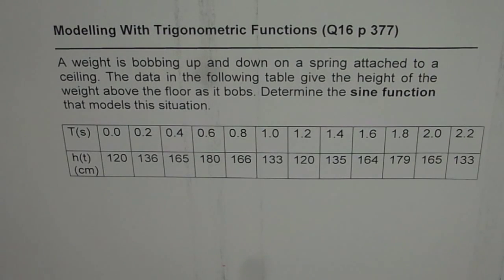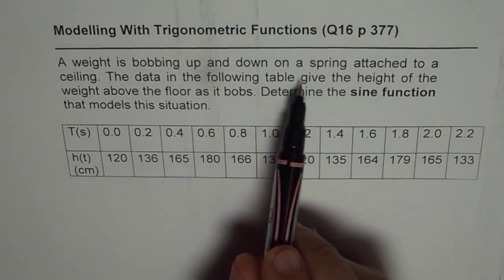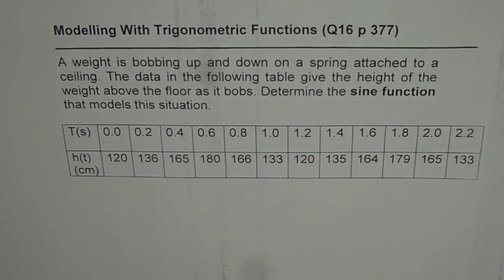We have earlier seen how to find trigonometric function from graph and this question is question number 16 page 377 as requested by you. A weight is bobbing up and down on a spring attached to a ceiling. The data in the following table give the height of the weight above the floor as it bobs. Determine the sine function that models this situation.